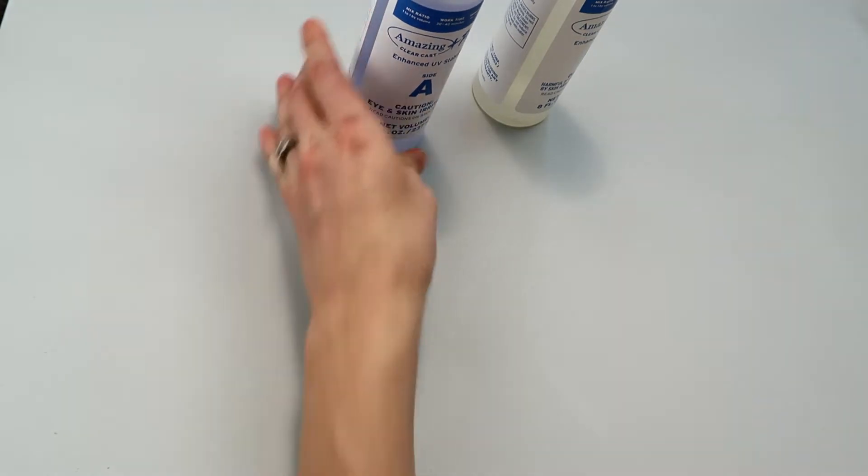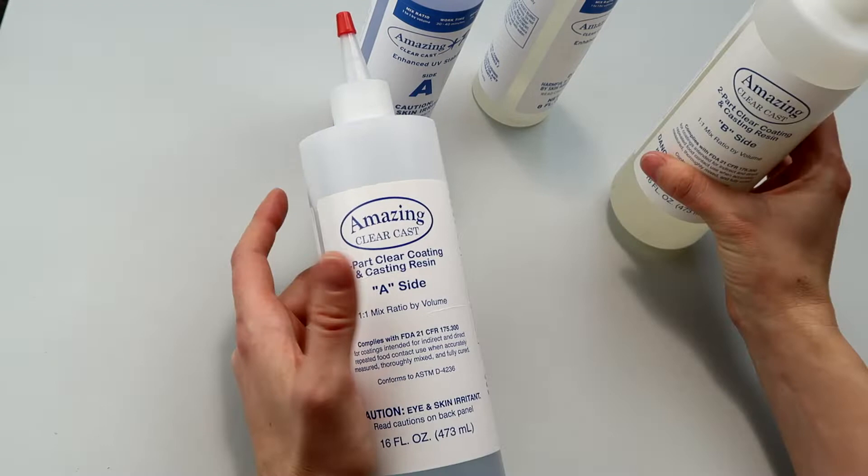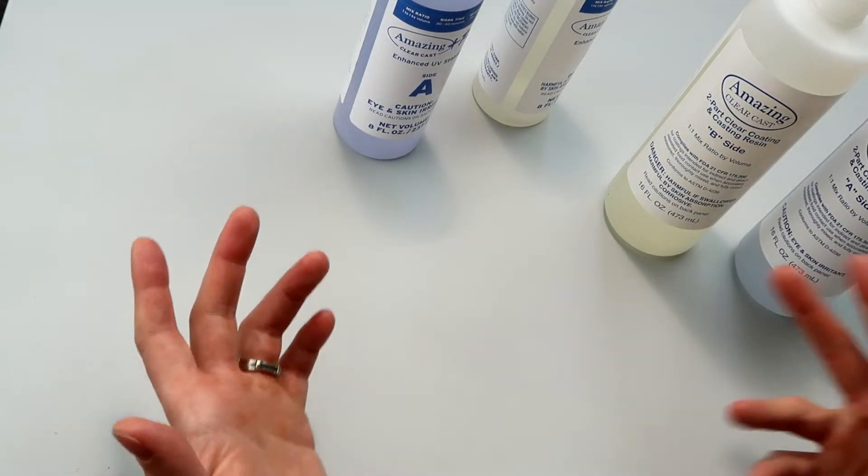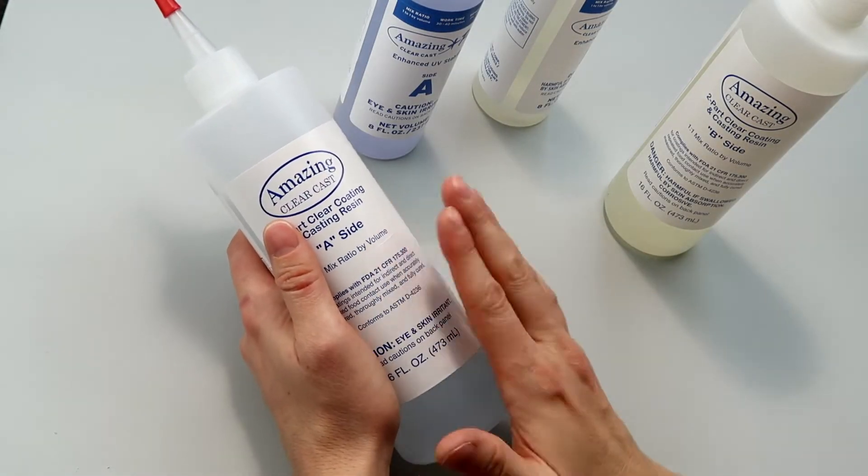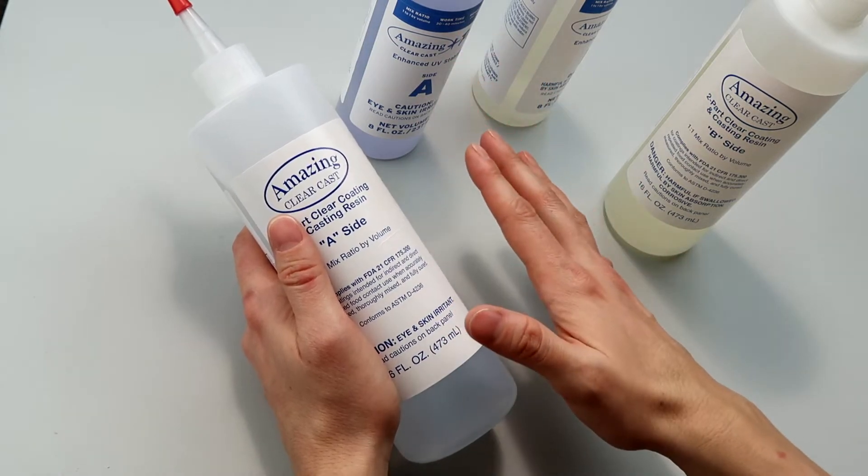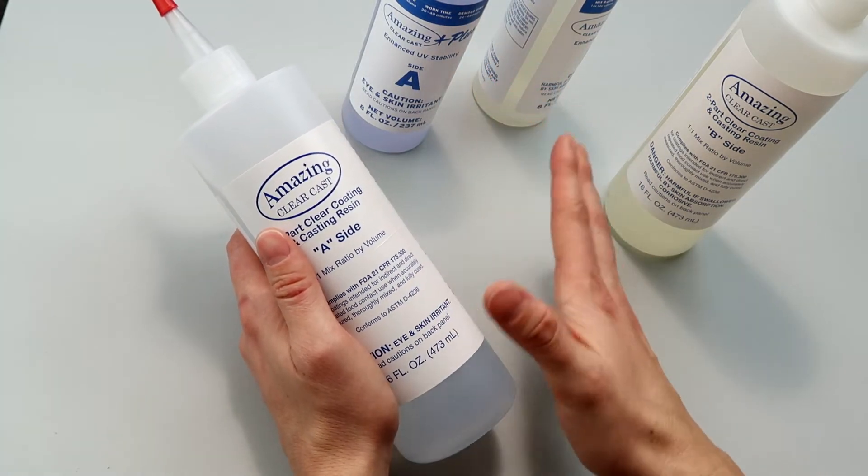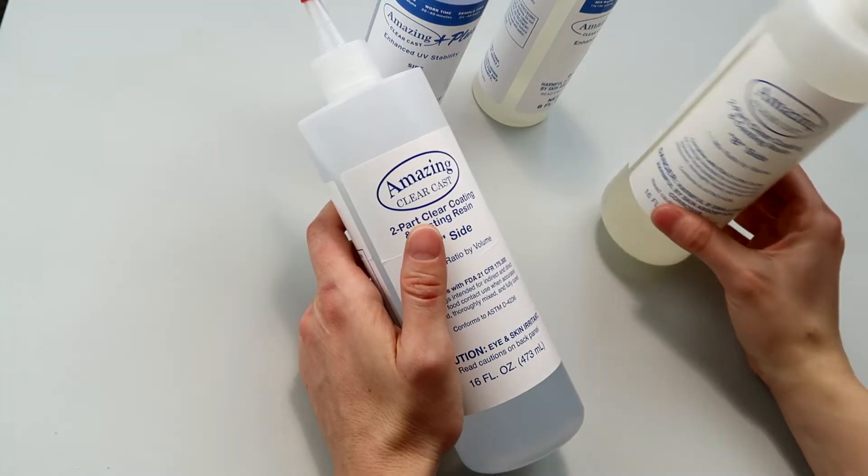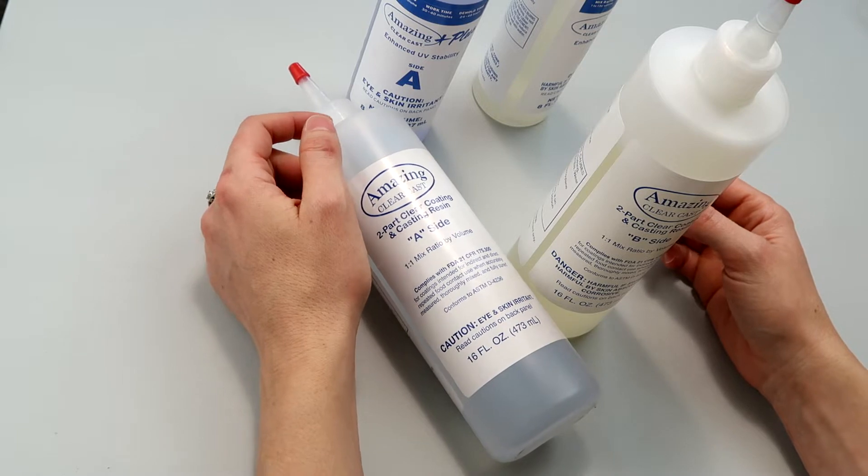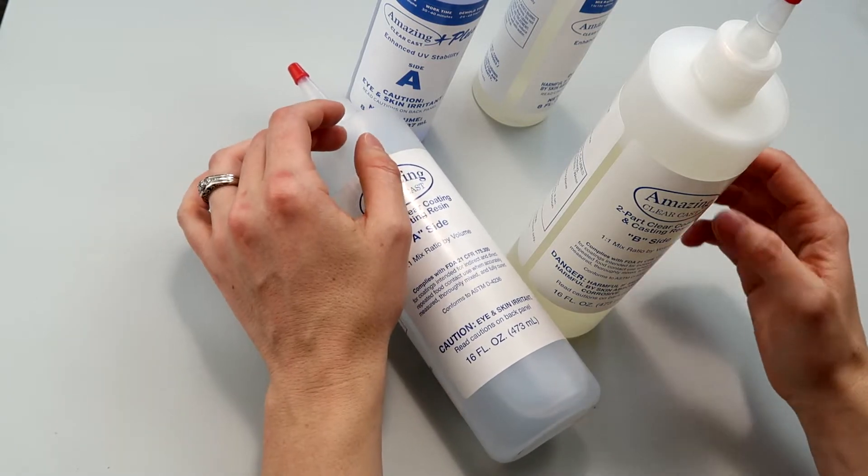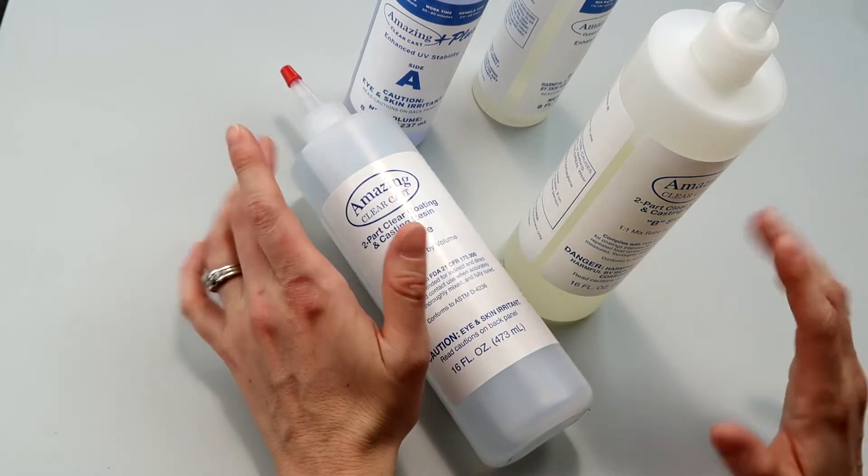Before I start to work with this though, I want to talk about Amazing Clearcast in general because I use it a lot. There's more things I like about it than things that I don't. What I like about this Amazing Clearcast, and I'm wondering if these two formulas are similar in these aspects, is that it cures fast. It cures very fast. I would say within about eight hours your piece is almost fully cured, and if you're making pieces with layers you can start to build the layers quicker because of how fast it cures. That's a big selling point for me.